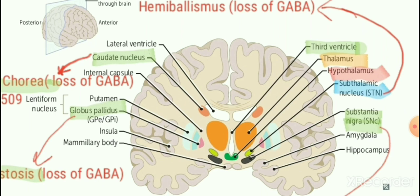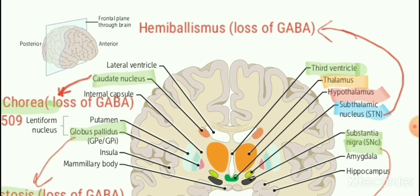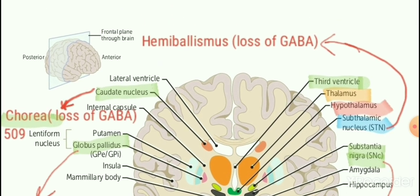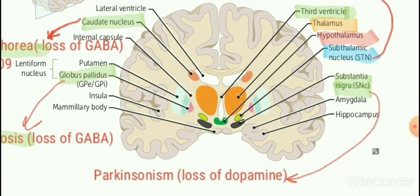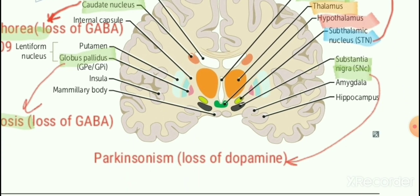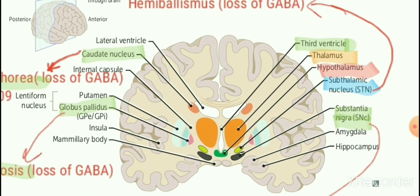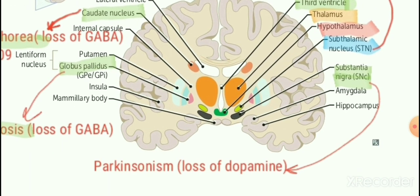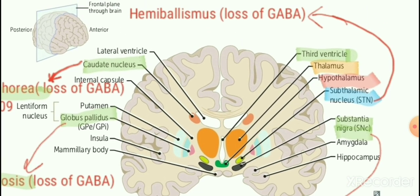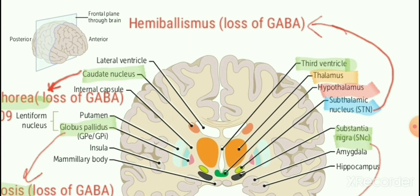We shouldn't confuse subthalamus from hypothalamus. First there is thalamus, then hypothalamus, then subthalamus, and then substantia nigra. Subthalamic nucleus if damaged results in hemibalismus, and substantia nigra if damaged results in Parkinsonism. These are two MCQs. Substantia nigra is famous — in Parkinson's disease the loss of neurotransmitter is dopamine, and in subthalamic loss it is GABA.